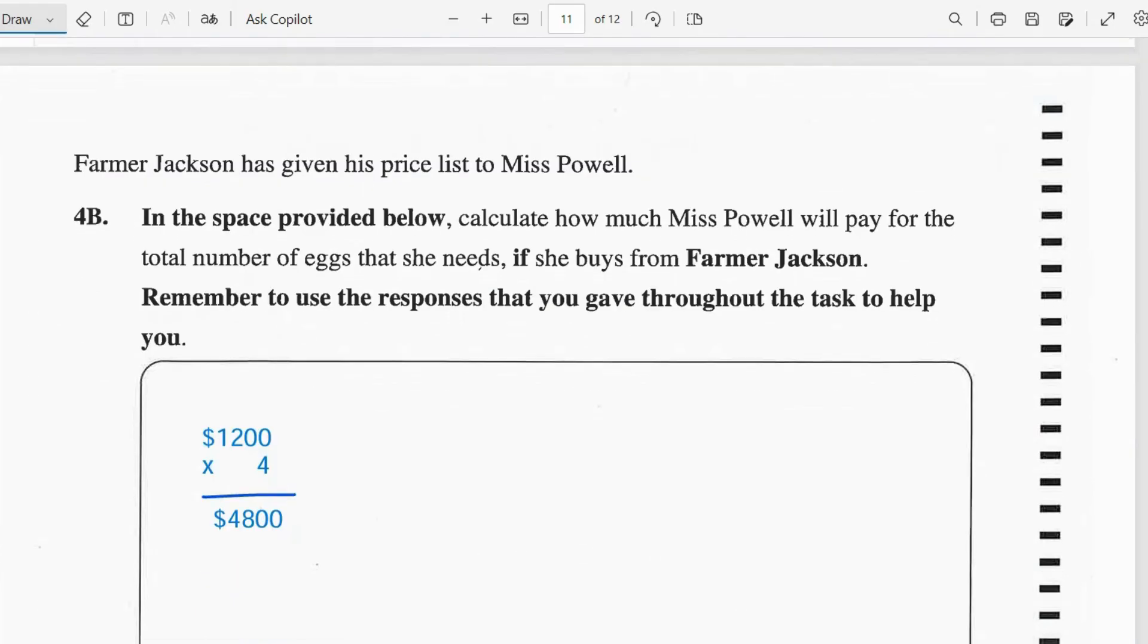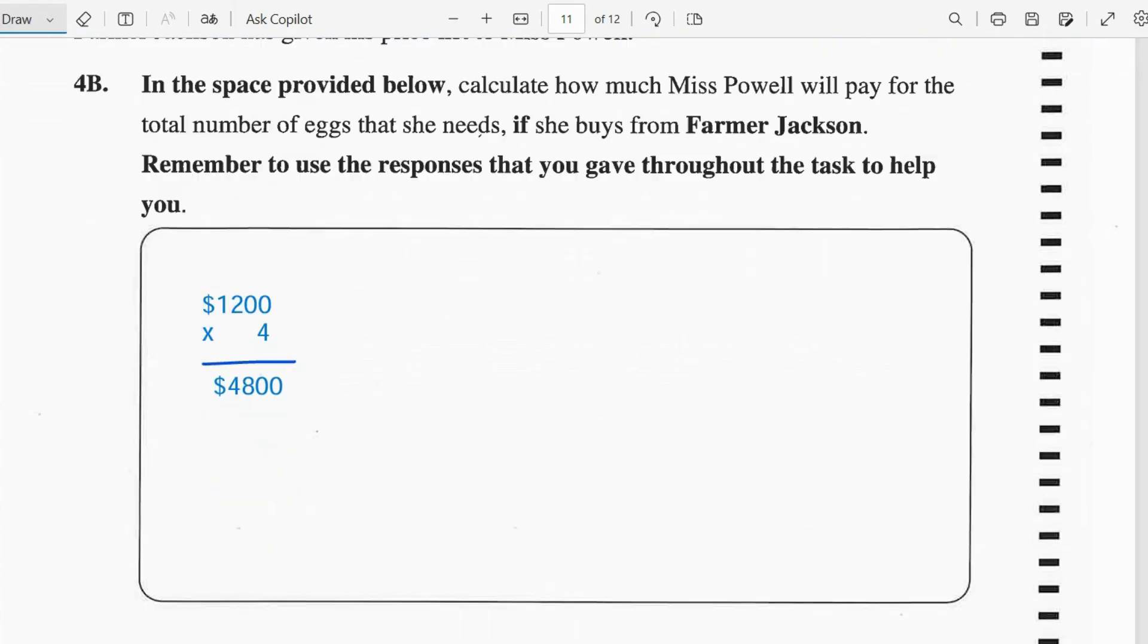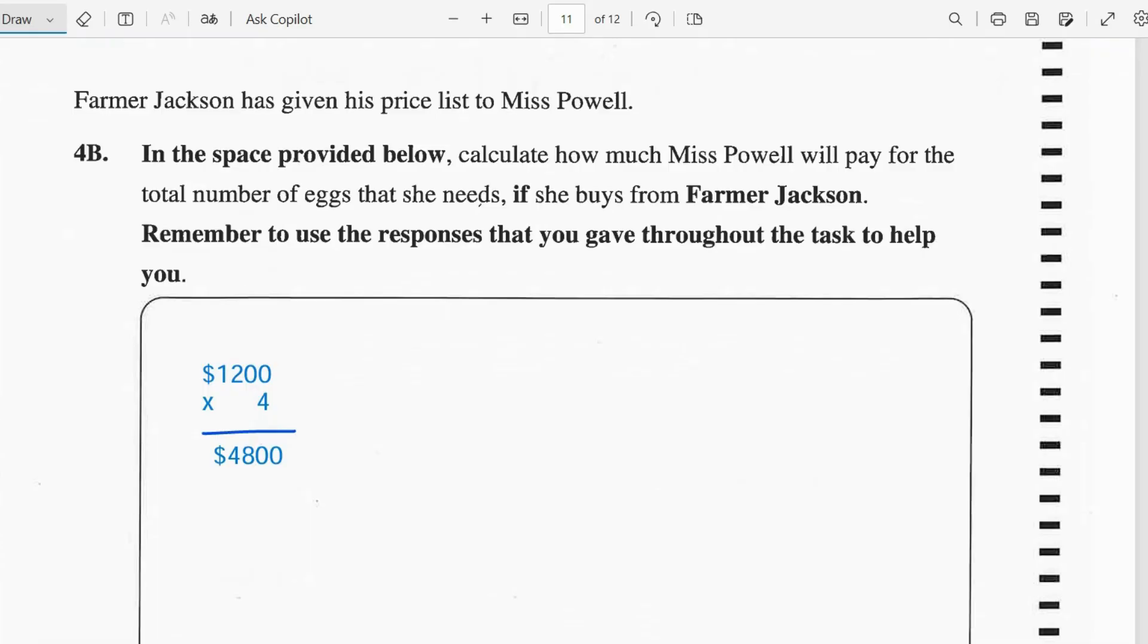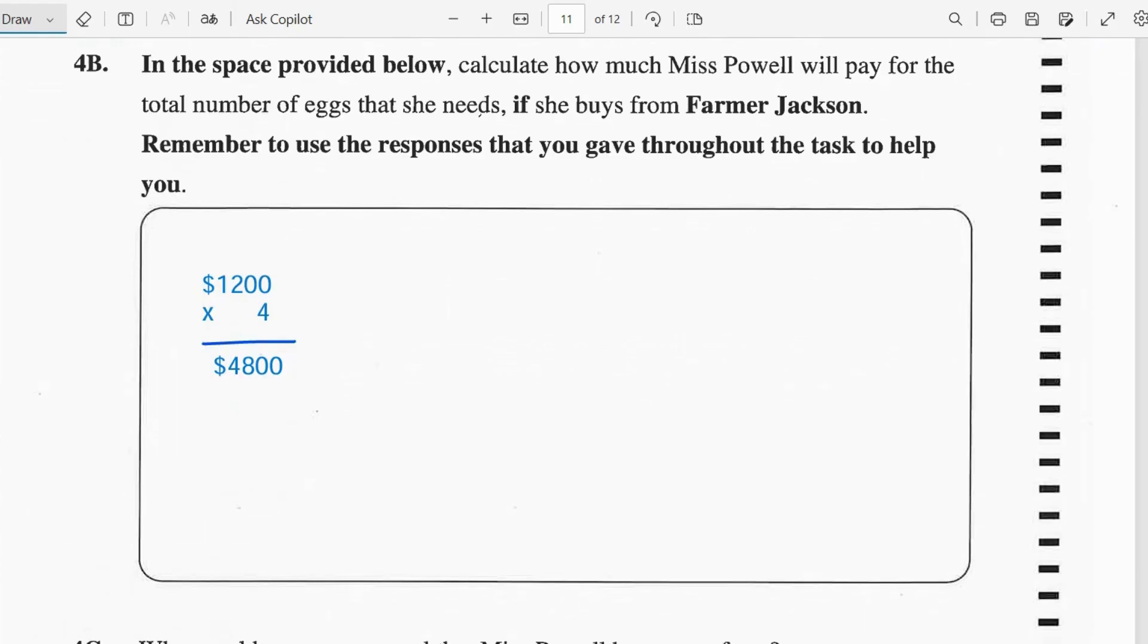So now let's move on to the next one, Farmer Jackson has given his price list to Ms. Powell. So for 4B, in the space provided below, calculate how much Ms. Powell will pay for the total number of eggs that she needs if she buys from Farmer Jackson. So remember that Farmer Jackson is selling one flat of eggs, which is 30 eggs, for $1,200.